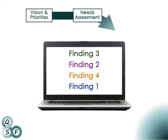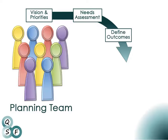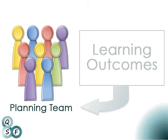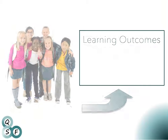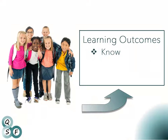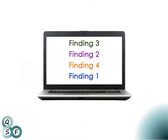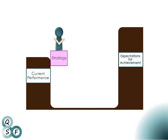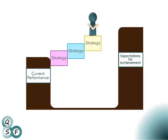The needs assessment priorities will guide the planning team in the next steps of the planning cycle as they develop concrete learning outcomes that define what students will know, accomplish, and be able to do when they reach the academic improvement targets. The priorities identified during the needs assessment will also guide the selection of strategies with the potential to accomplish the desired student outcomes.